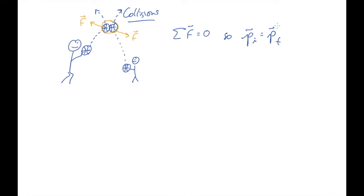This means the momentum immediately before these forces showed up — immediately before they collided — if I added up all the momentums, it would equal the momentums immediately after the collision. So they collide and go their separate ways, and immediately afterwards the momentum is the same as it was before.